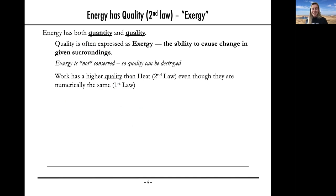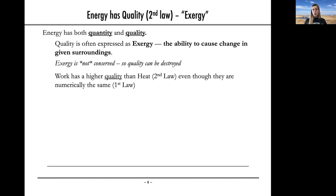Energy not only has quantity, it also has quality. Quality means how useful is it — what is its ability to cause change given its surroundings? This is often termed exergy. Exergy, or energy quality, is not a conserved quantity; the quality of your energy can be destroyed. For example, work has a higher quality than heat. You could convert work to heat — from high quality to low quality — even though quantitatively they might be the same. A kilowatt-hour of electricity can do a lot; a kilowatt-hour of hot water in a bathtub — you can't do a whole lot with that. Same quantity, different quality.